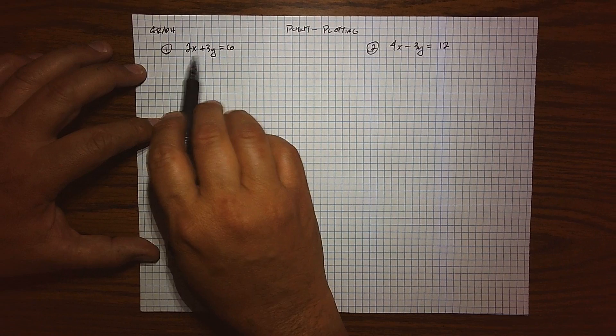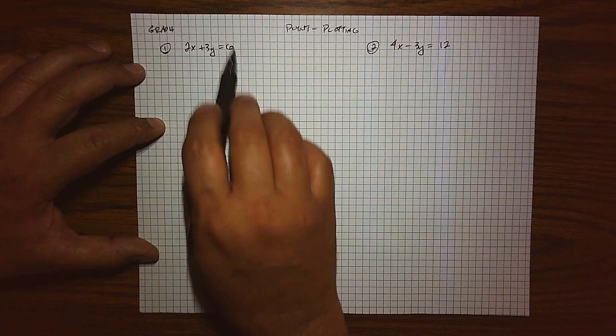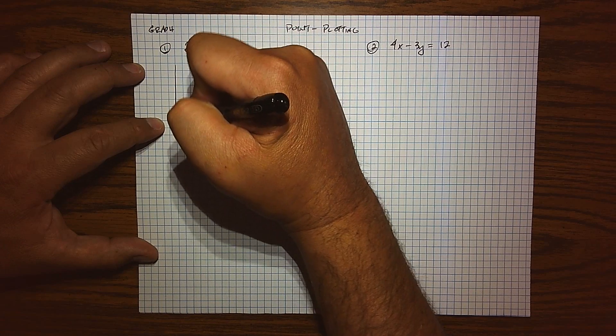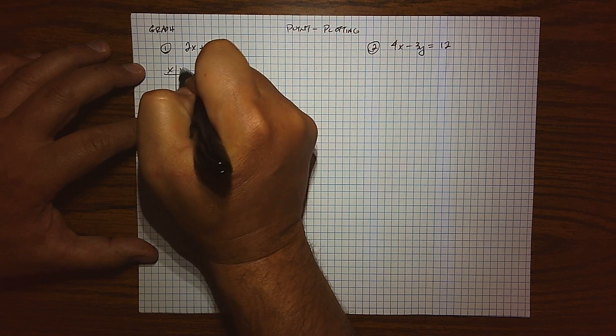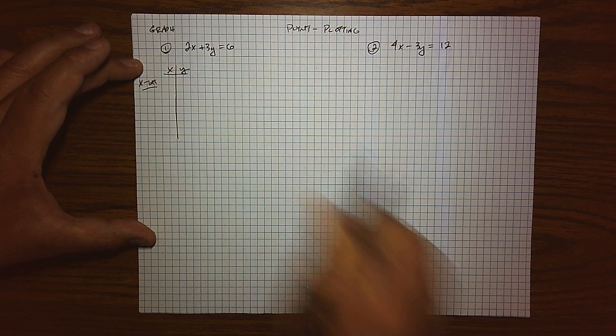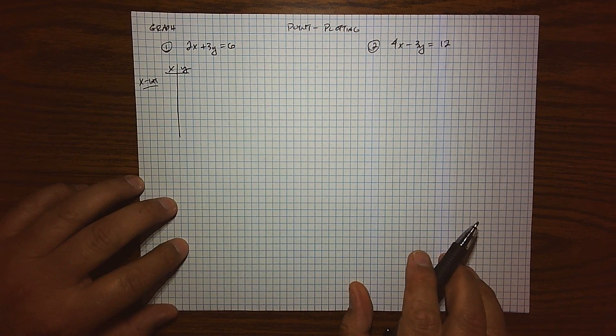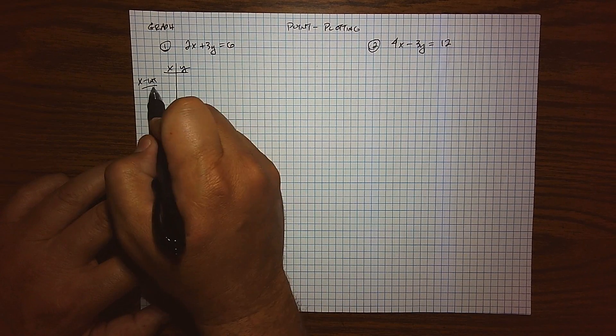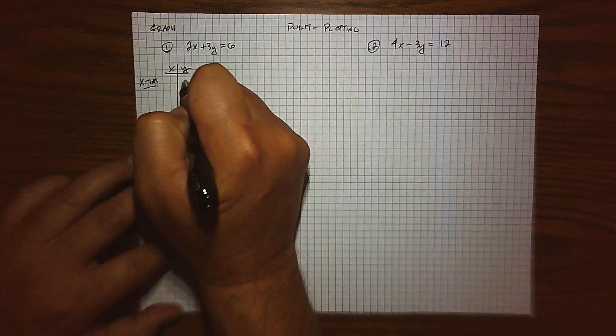So, 2x plus 3y equals 6. What's the graph? What are the solutions to this equation? I'll organize myself in a table of data and we'll start by finding the x-intercept. Where does this graph cross the x-axis? Well, what we saw in the last video is the way I find these is I let y equal to 0. So when I plug that into the equation...